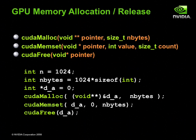Device memory allocation, assignment, and release functions are similar to C's functions. Where C has malloc, memset, and free, CUDA has cudaMalloc, cudaMemset, and cudaFree. The prototypes between the C and CUDA functions are similar, except that cudaMalloc returns the pointer to the address of allocated memory on the device as the first argument. This is because all CUDA API functions return an error code that can be used to verify successful completion of the call. CUDA error reporting is discussed at the end of programming basics.